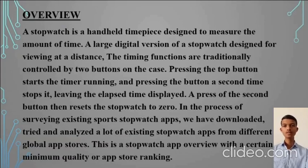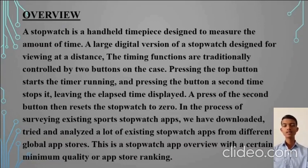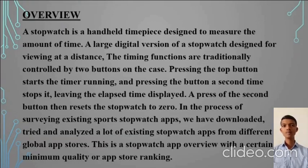A large digital version of a stopwatch is designed for viewing at a distance. The timing functions are traditionally controlled by two buttons on the case. Pressing the top button starts the timer running and pressing it a second time stops it, leaving the elapsed time displayed. Pressing the second button resets the stopwatch to zero. In our survey of existing sports stopwatch apps, we have downloaded, tried, and analyzed a lot of existing stopwatches from different app stores.